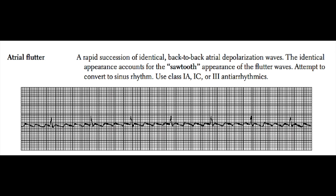Generally, you will have a ratio of two or three flutter waves for every QRS complex. In this diagram, you can see that there are four flutter waves for every QRS complex. The way to diagnose atrial flutter is to look at the baseline and look for the sawtooth patterning. In these patients, you try to get them back into sinus rhythm, which can be achieved by electrical cardioversion or by the use of class 1A, 1C, or class 3 antiarrhythmics.